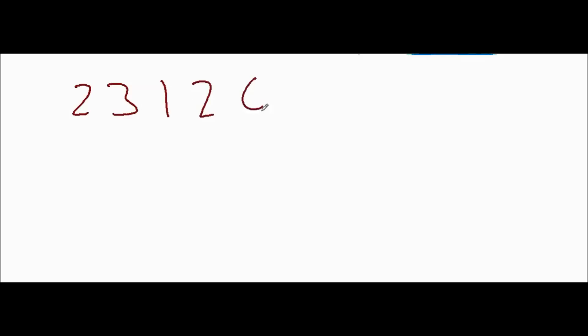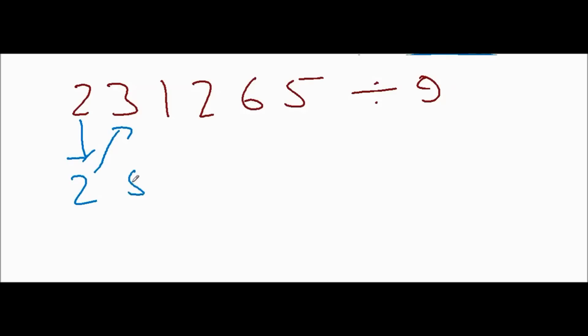Let's take another example. We take the number 2 3 1 2 6 5 and we have to divide it by nine. You know the method: first write 2 as it is, then 2 plus 3 is 5, and 5 plus 1 is 6, then 6 plus 2 is 8, then 8 plus 6 is 14 — so write 4 here with carry 1.